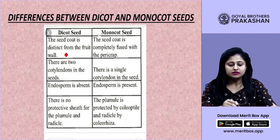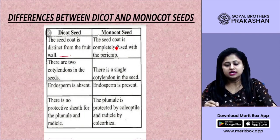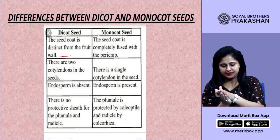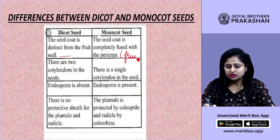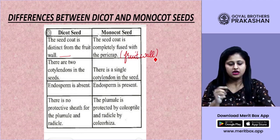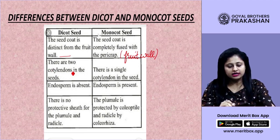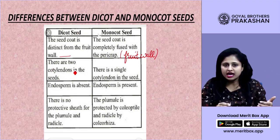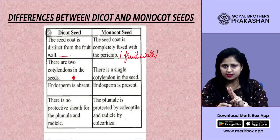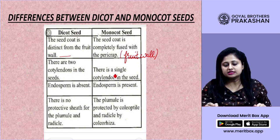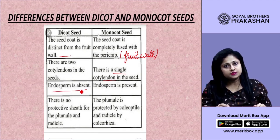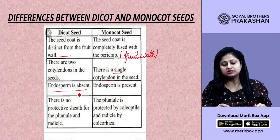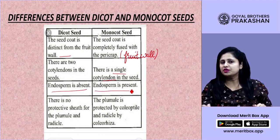In dicot seeds, the seed coat is distinct from the fruit wall, while in monocot seeds the seed coat is completely fused with the pericarp (fruit wall). Dicot seeds have two cotyledons; monocot seeds have a single cotyledon. Endosperm is absent in dicot seeds but present in monocot seeds — endosperm is a layer that nourishes the developing embryo.